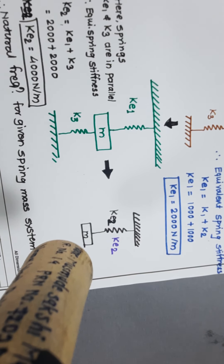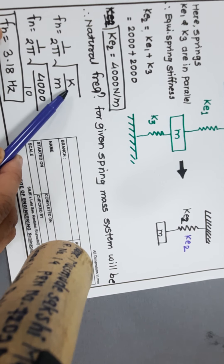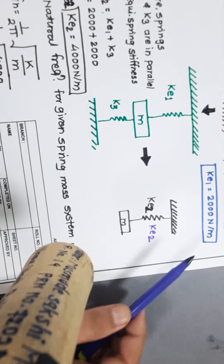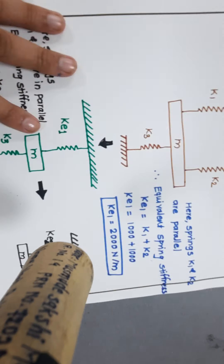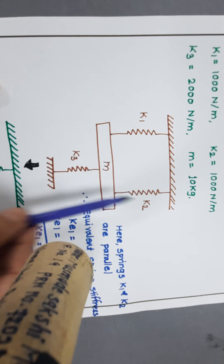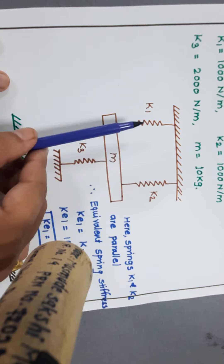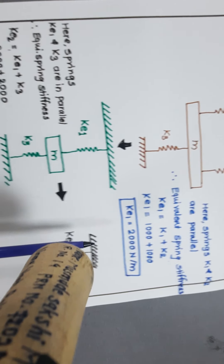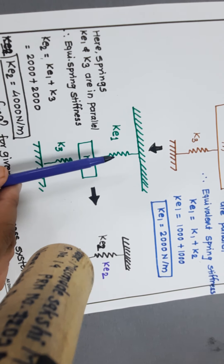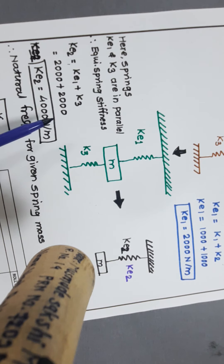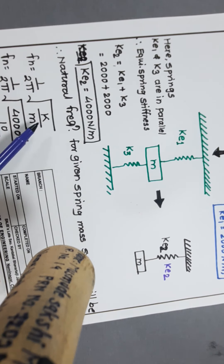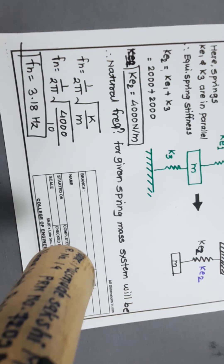In this problem we computed two intermediate values, ke1 and ke2. Always use the final equivalent stiffness ke2 in the natural frequency formula, since it represents the equivalence of all springs in the system. Here, three springs were combined in two steps — first k1 and k2 in parallel to get ke1, then ke1 and k3 in parallel to get ke2 — and then ke2 is used to find the final answer.